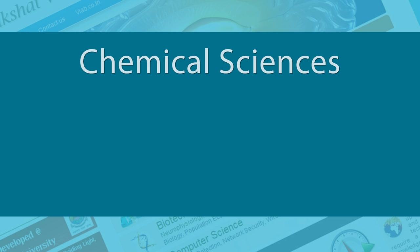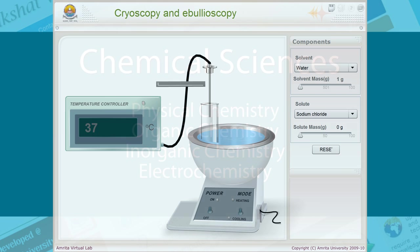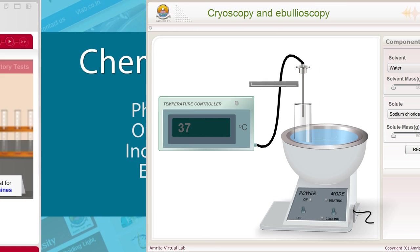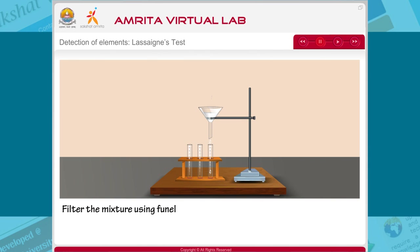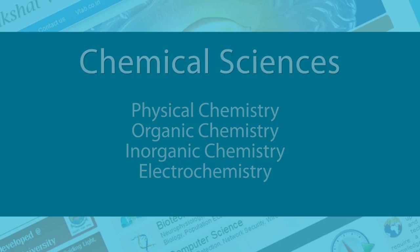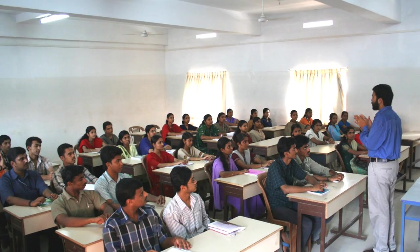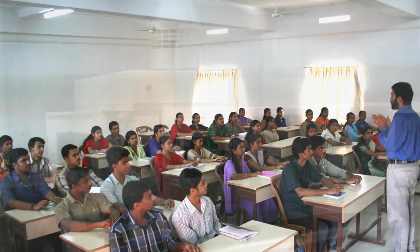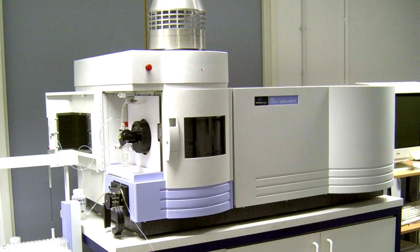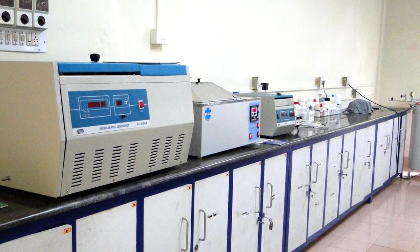Virtual Chemical Science Lab uses simulators and animations to cover experiments such as cryoscopy and nebuloscopy, detection of elements, science tests, etc. These tools help train students in the use of sophisticated and complicated instruments that are routinely employed in modern scientific laboratories.